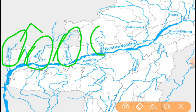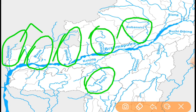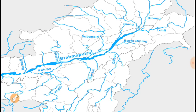Barnavi, Barali, Subansiri, Subansiri — right side tributaries, left side — Kopili.